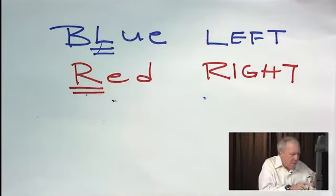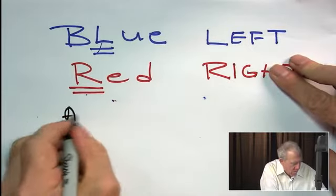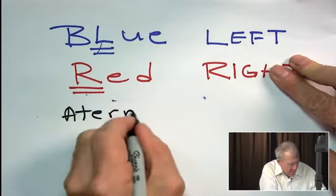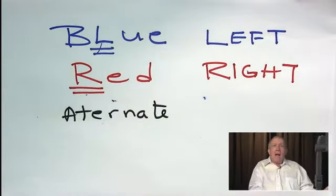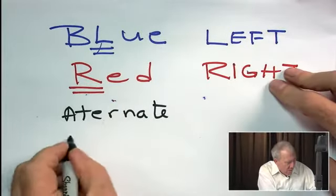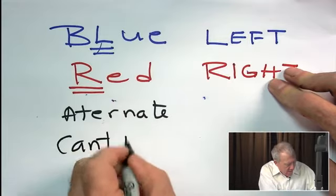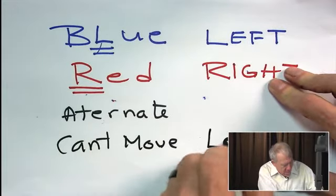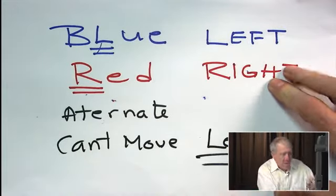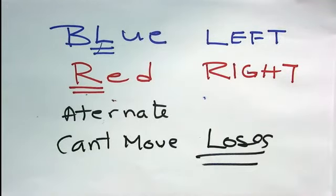Now, these players are going to alternate play and the first one that can't move loses. So there's no ties at each stage in the game. There will be various moves available to one player or the other player or perhaps both. And whoever runs out of moves loses.